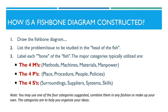So how is a fishbone diagram constructed? First, draw the fishbone diagram. Next, list the problems or issues to be studied in the head of the fish. Then label each bone of the fish. The major categories typically utilized are the four M's, which includes methods, machines, materials, and manpower; the four P's, which includes place, procedure, people, and policies; and the four S's, which includes surroundings, suppliers, systems, and skills. Note: you may use one of the four categories suggested, combine them in any fashion, or make up your own. The categories are suggested to help you organize your ideas.